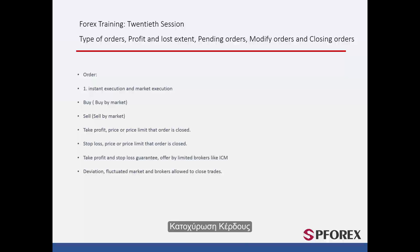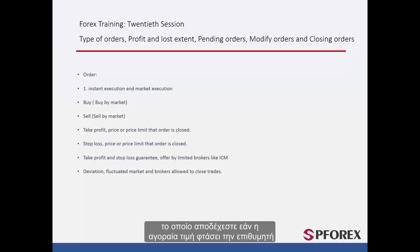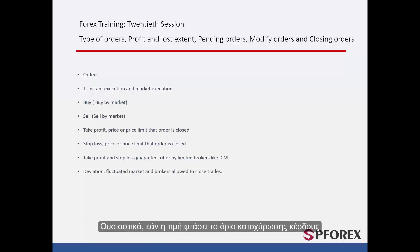Take Profit, or profit amount abbreviated to TP, is a limit you set on an order which you accept if the market price meets your target price. Essentially, if the price meets your take profit limit, the order will be closed automatically.